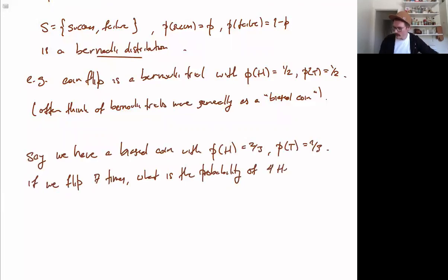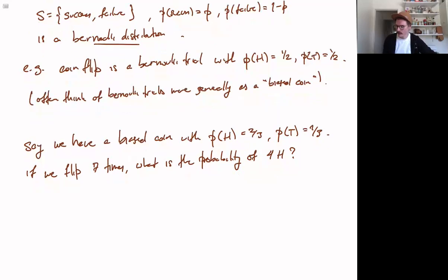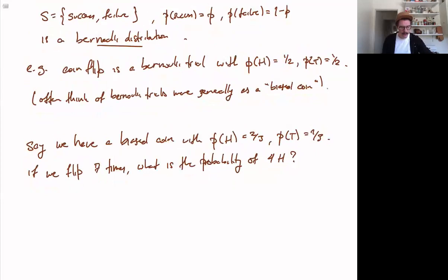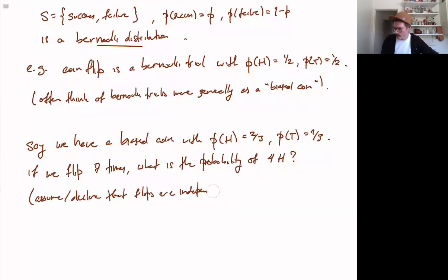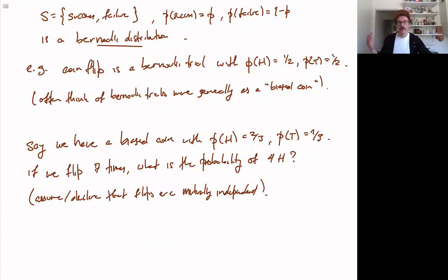What is the probability that we get exactly four heads out of these seven flips? We defined independence, and we are going to assume — slash declare — that flips are mutually independent. You will remember that there is a difference between being pairwise independent and being mutually independent. So we assume all of our coin flips are mutually independent, meaning one flip of a coin will not affect the next flip of the coin, and that's what independence is supposed to mean.